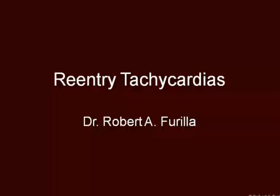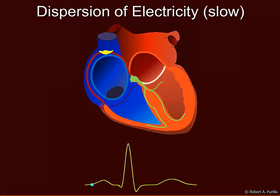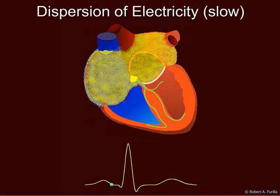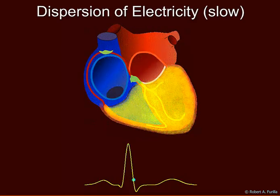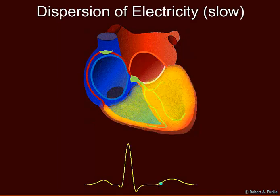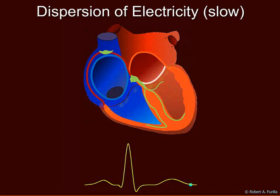I'm going to discuss re-entry tachycardias. I'm not going to talk about all of the tachyarrhythmias, just the re-entry circuit. This is a slow motion animation of the electrical conduction on the heart. It begins at the SA node, travels around the atria, down the AV node to the ventricles, and now repolarization.